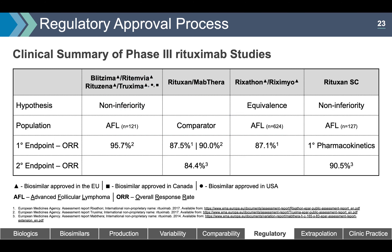In rituximab clinical trials: Truxema demonstrated non-inferiority in a trial with 121 lymphoma patients. Rixathon demonstrated equivalence in a trial with 624 lymphoma patients. Despite several brand names, there are only two approved rituximab biosimilar molecules.